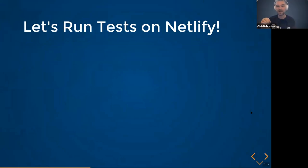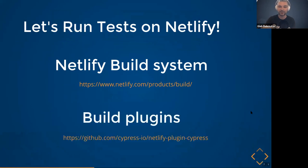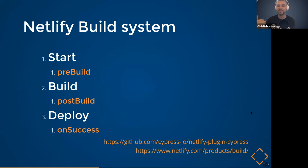Here's what the Netlify build system provides. There are steps during the build and deploy process — not just npm run build and deploy. In the build system there are plugins, and I have written a plugin for Cypress. There is a start of a build, the build itself, and deploy. In between, your plugin can do something: before you build, after you build, or on successful deployment. There's also an on-failed-deployment hook.